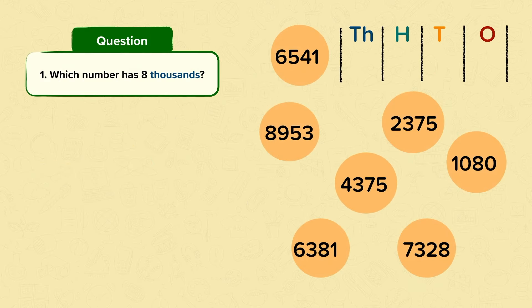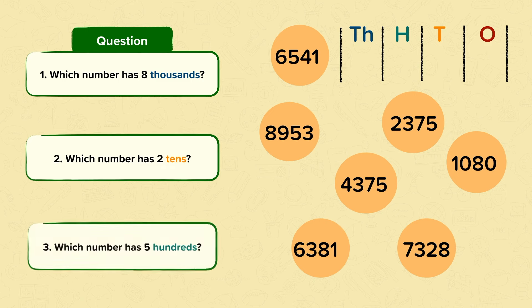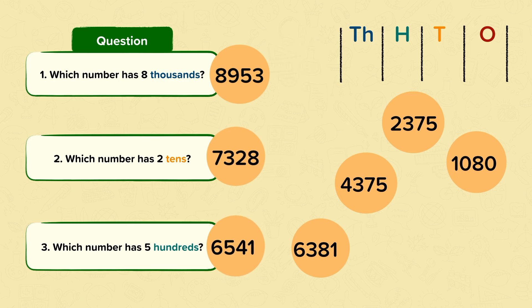Have a look at these numbers here. Can you find which number has eight thousands, which number has two tens and which number has five hundreds? Pause the video if you need to. Well done if you knew that eight thousand nine hundred and fifty-three has eight thousands, seven thousand three hundred and twenty-eight has two tens, and six thousand five hundred and forty-one has five hundreds.